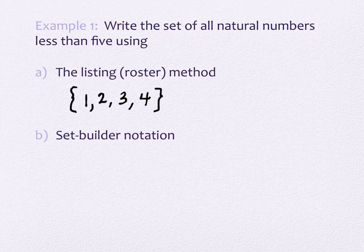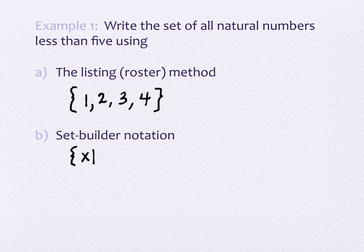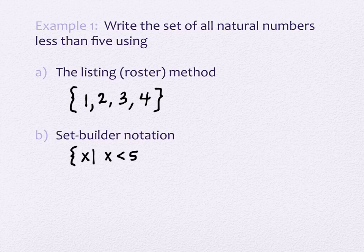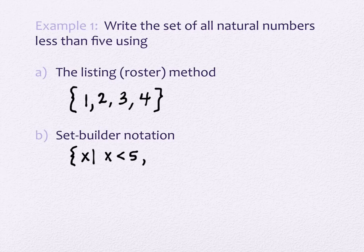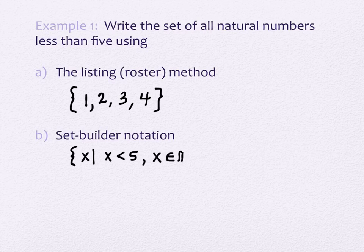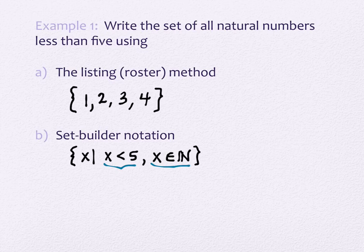Set builder notation, which we talked about a little bit last time, starts with a curly brace as well. You write down X and a bar. There are two more pieces of information you have to include — they can be listed in either order. The inequality description is usually listed first: X is less than five. Then you have to say what kind of number, because if you stop there, it would include things like negative two, 3.7, and pi. You need to say that X is an element of the natural numbers. You could also switch the order of these two.